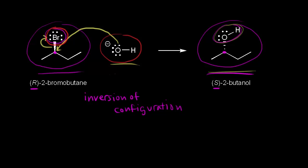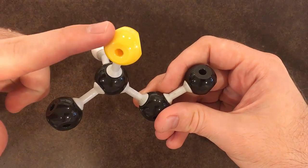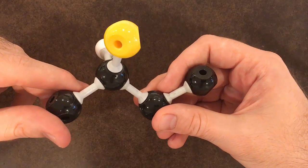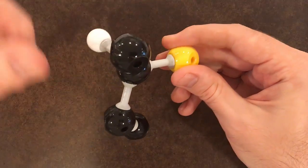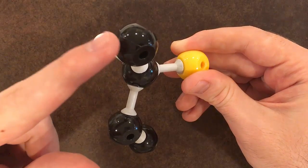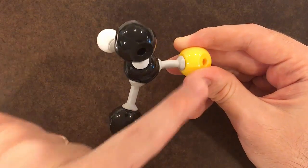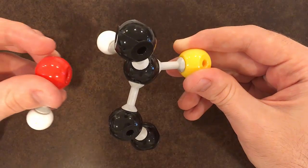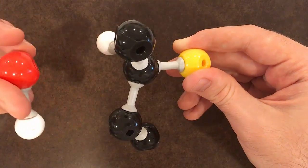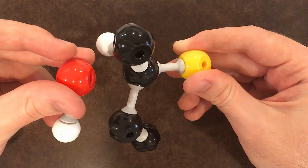Next, we're going to use a model set to show how R-2-bromobutane turns into S-2-butanol. Here is R-2-bromobutane — I've made bromine yellow and left the hydrogens off the alkyl groups to make it easier to see. Looking at our chiral center, we have tetrahedral geometry around this carbon: a methyl group coming out at us in space, a hydrogen going away from us, an ethyl group going down, and our bromine off to the right. The hydroxide ion has to approach our substrate from the side that's opposite of our leaving group.